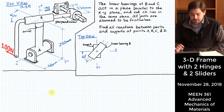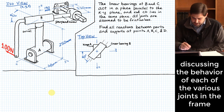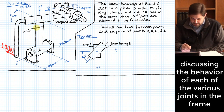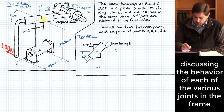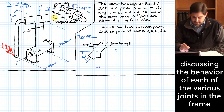We're going to solve a problem today where we find all the reactions between the various parts of a three-dimensional frame. This three-dimensional frame consists of basically three parts. We have this member that goes from A to B up on the top. This connection up here has a swivel which allows the top portion of this rod to rotate around that z-axis. Additionally, this part is called a linear bearing, which allows translational movement along the direction of that rod and also allows rotation around the axis of that part.